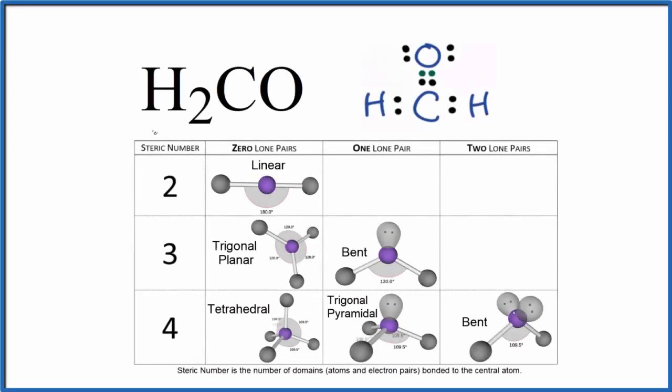There are a few ways to figure out the molecular geometry for H2CO. This is formaldehyde. So first we'll look at the Lewis structure and this table here based on steric number.